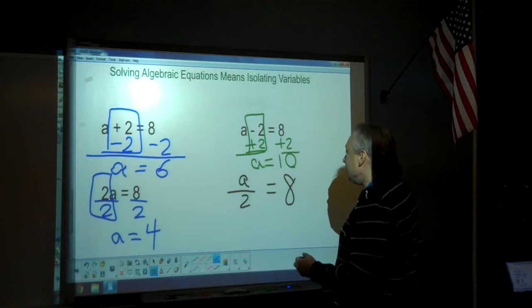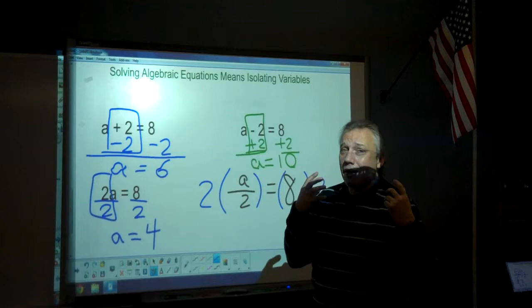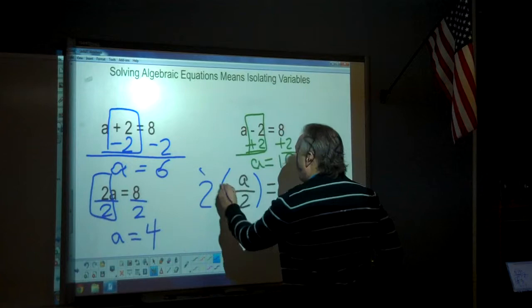On to our next one. a divided by 2 is equal to 8. The opposite of divided by 2 is to multiply both sides by 2. And another way to show multiplication, especially when you're talking about two numbers that are not variables, is a number in front of a number in parentheses also will always mean multiplication.